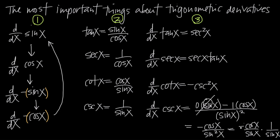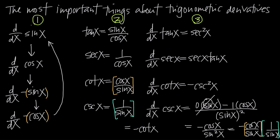In our first fraction we have cosine of x over sine of x, which equals cotangent of x. So keeping the negative sign, we write negative cotangent of x. In the second fraction we have 1 over sine of x, which equals cosecant of x. So the derivative of cosecant of x is negative cotangent of x times cosecant of x.